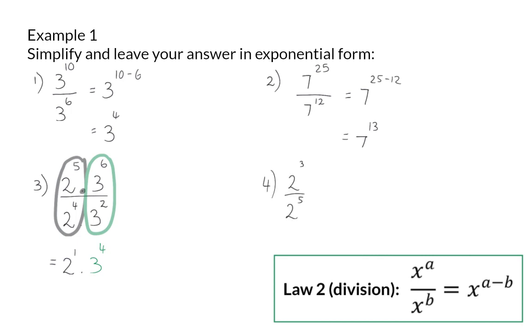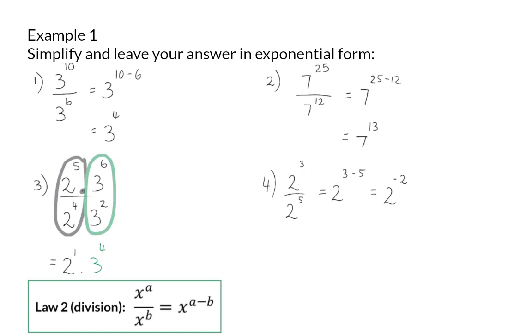In example 4, we now have three 2's in the numerator and five 2's in the denominator. So using our exponential law, we will say 3 minus 5, and the answer will be 2 to the power of negative 2. But what does this 2 to the power of negative 2 really imply?